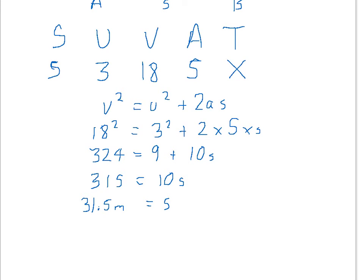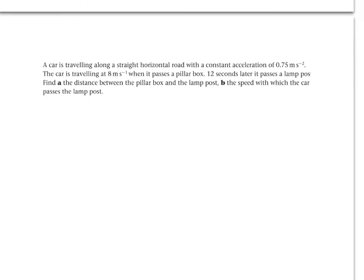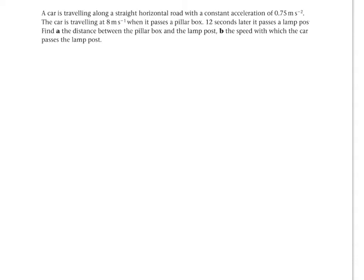Let's also look at an example where we're using both equations. A car is travelling along a straight road with a constant acceleration of 0.75 metres per second squared. The car is travelling at 8 metres per second when it passes a pillar box. 12 seconds later it passes a lamppost. Find: A, the distance between the pillar box and the lamppost; and B, the speed with which the car passes the lamppost. Let's underline the key points: the acceleration, the speed at the pillar box, and the 12 seconds as the time. We'll call A the pillar box and B the lamppost.